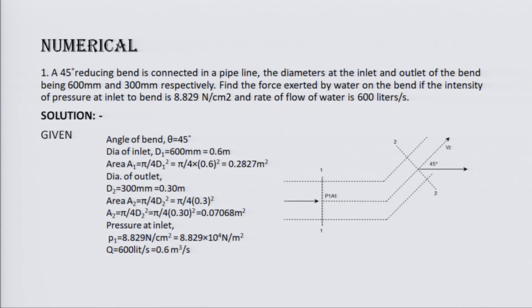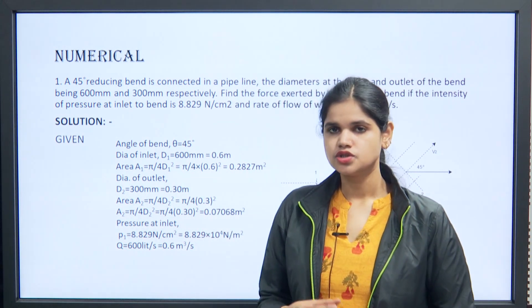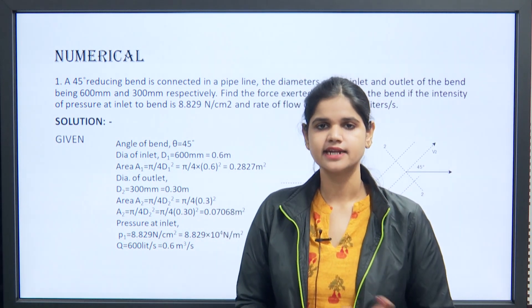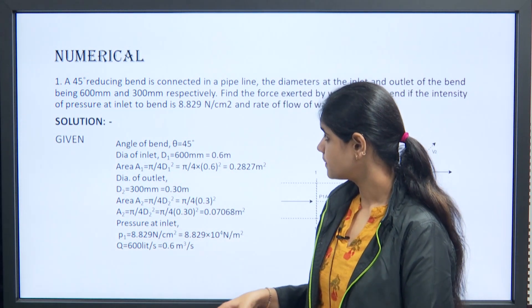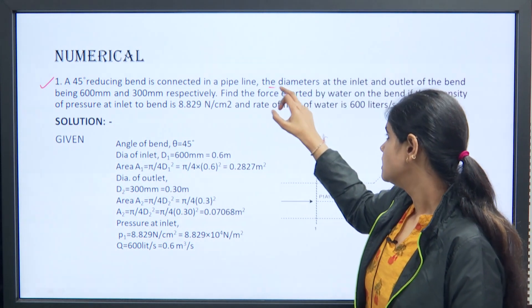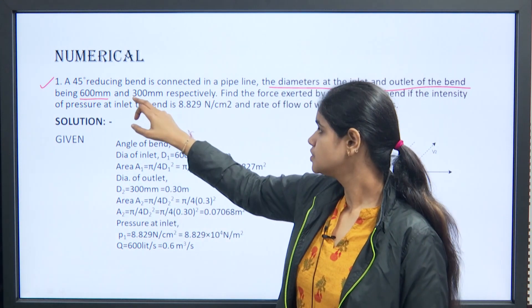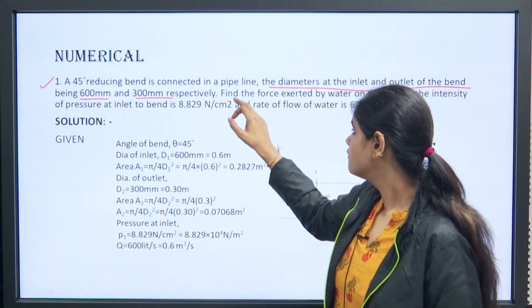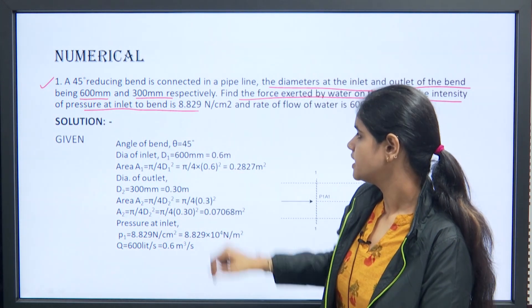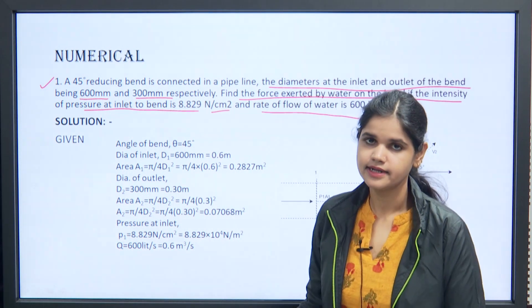The numerical on bent pipe is a bit tricky. If you are not careful, some terms go missing or signs get interchanged. The problem: a pipe bend has diameters of 600 mm and 300 mm at inlet and outlet respectively. Find the force exerted by water on the bend if the intensity of pressure at the inlet is 8.829 N/cm² and the rate of flow is 600 litres per second.